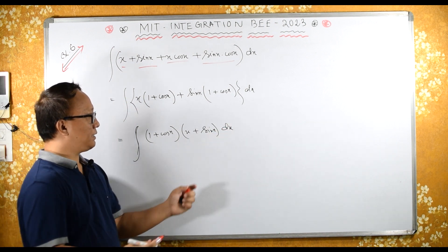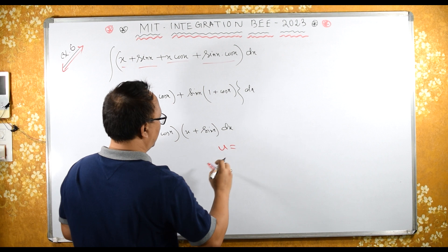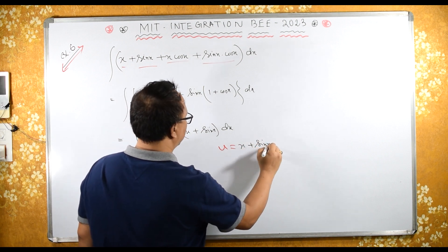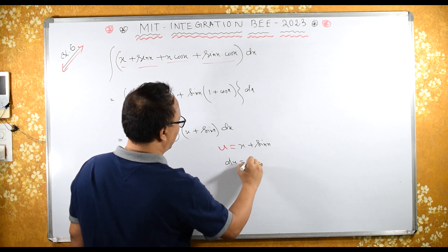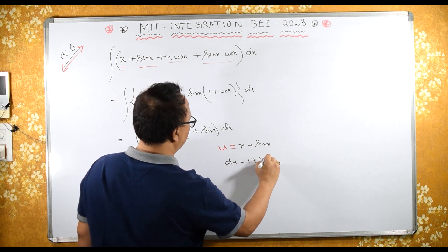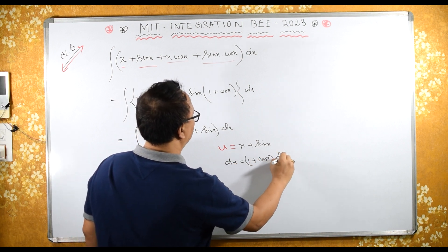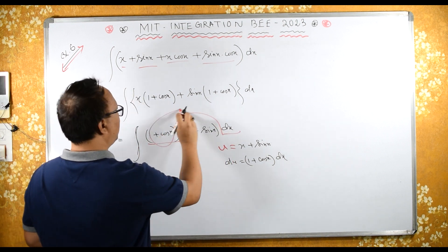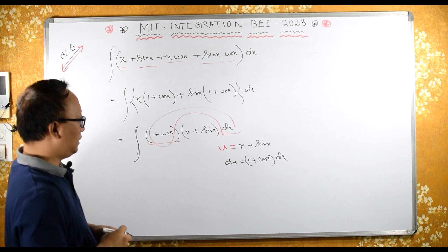Then you substitute this, substitute u equals to x plus sin of x, then du equals to 1 plus, differential sine is what? cos x dx. Now whole, this becomes your du.